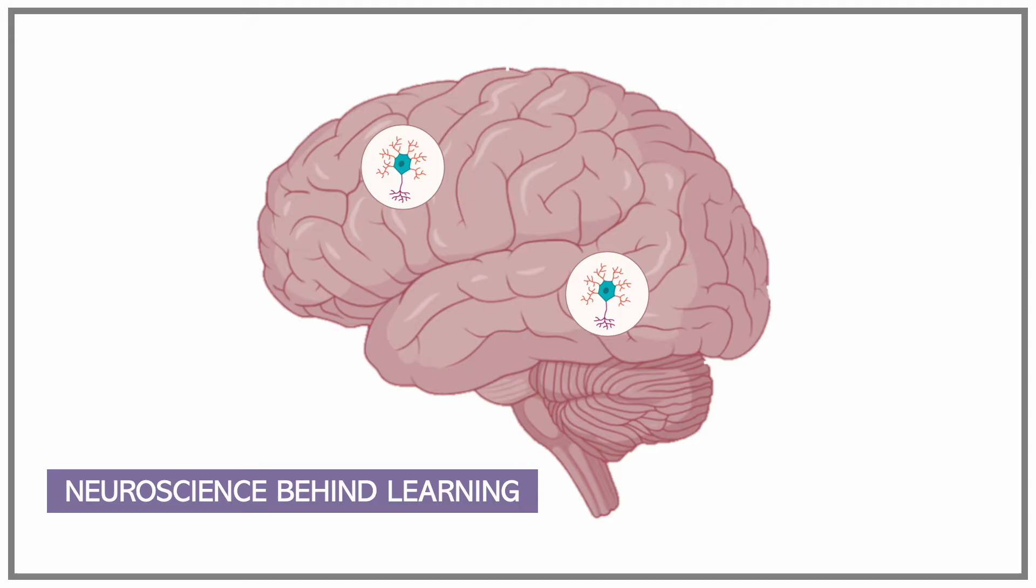When we are learning something, neurons in different parts of the brain communicate with each other. If two neurons frequently interact, they form a connection that allows them to transmit messages more easily and accurately. We will further explain this with a learning example and an analogy.